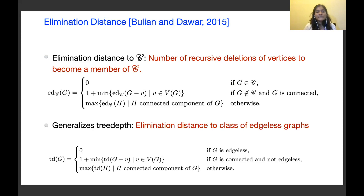A similar notion connected to elimination distance is tree depth. Elimination distance generalizes tree depth, and tree depth can be seen as elimination distance to the class of edgeless graphs.